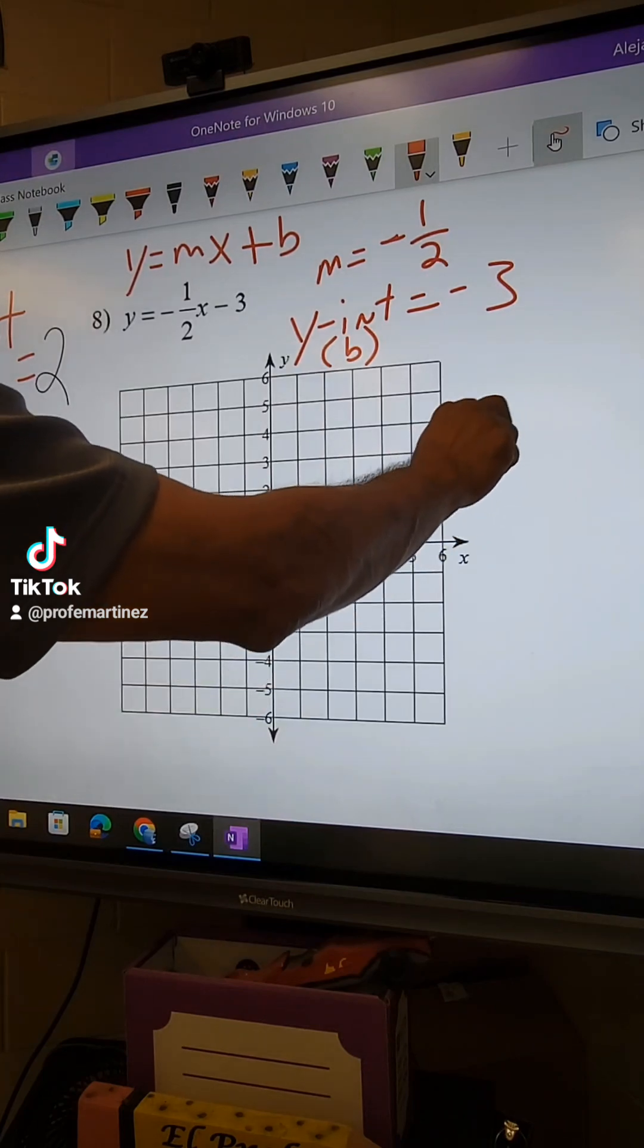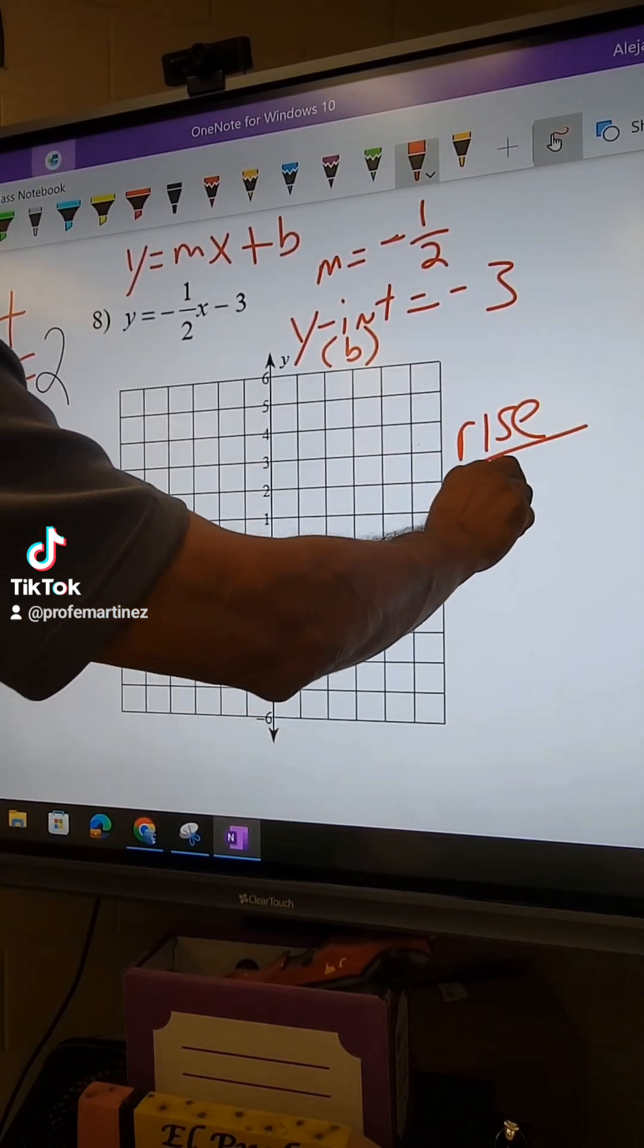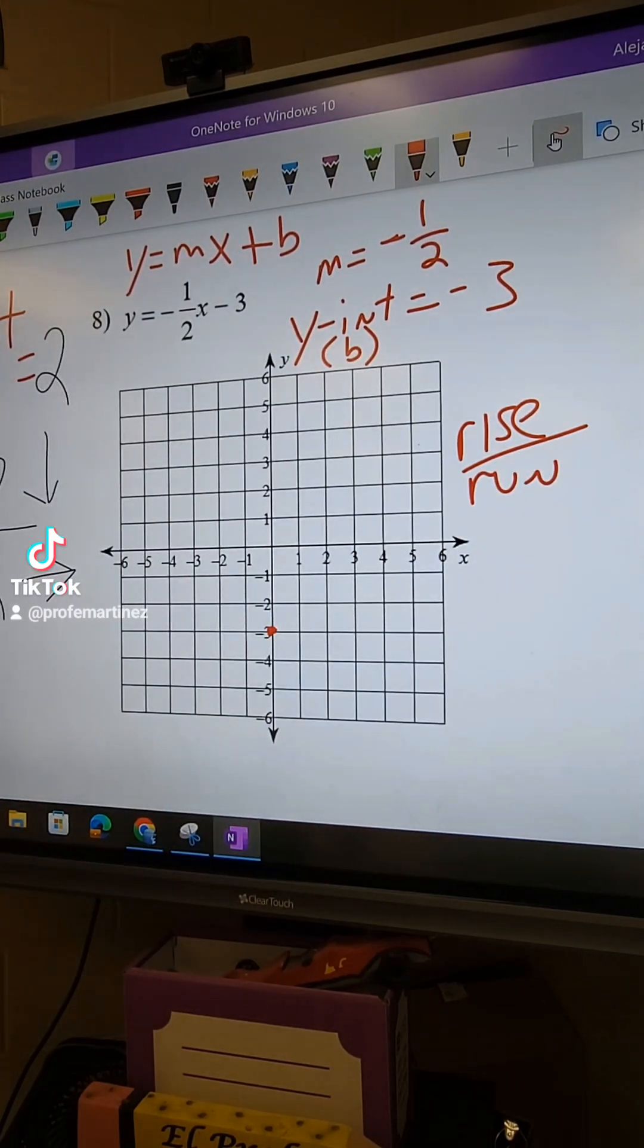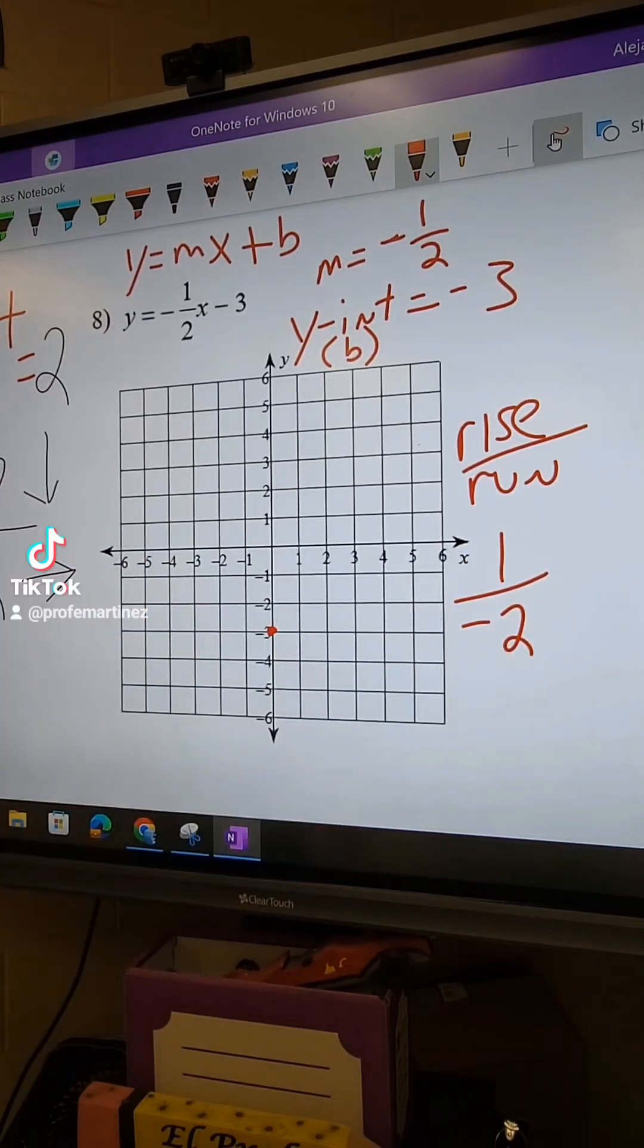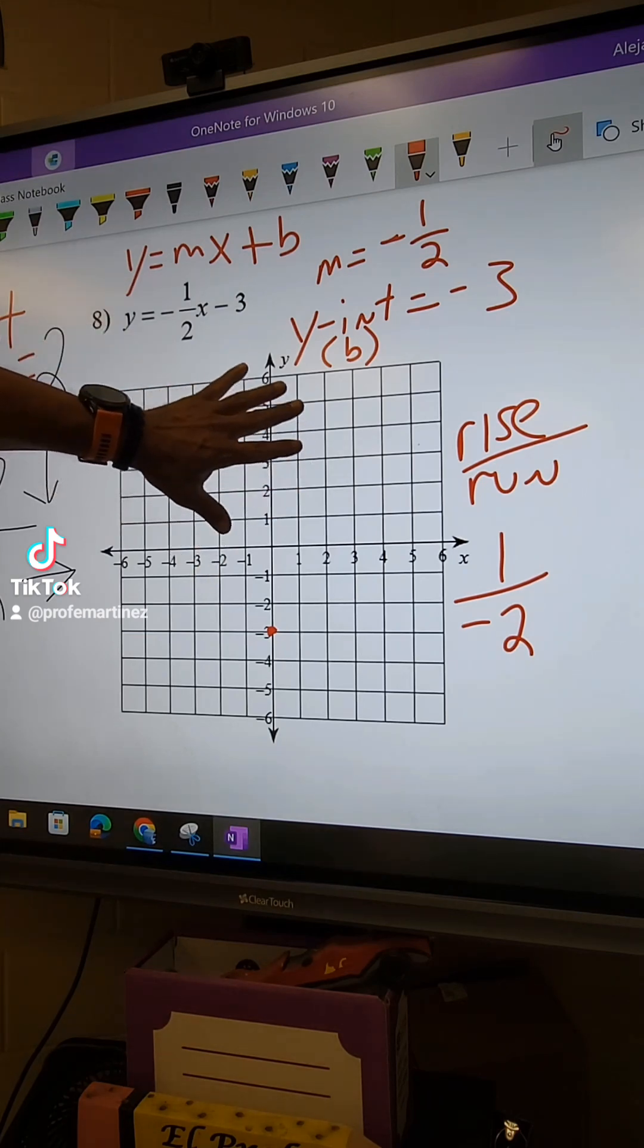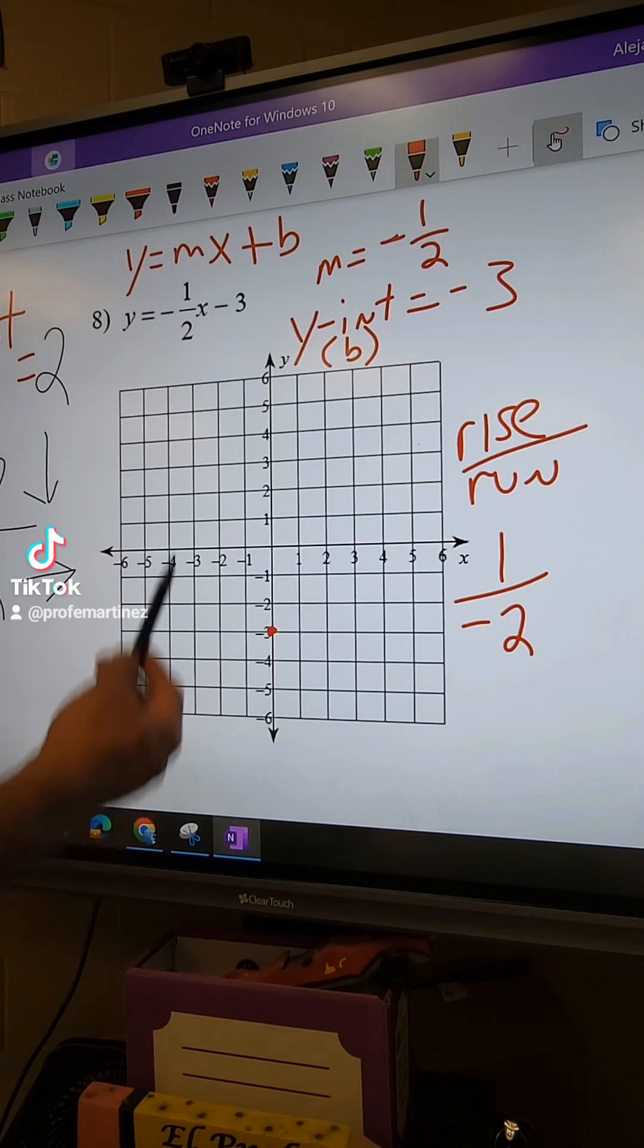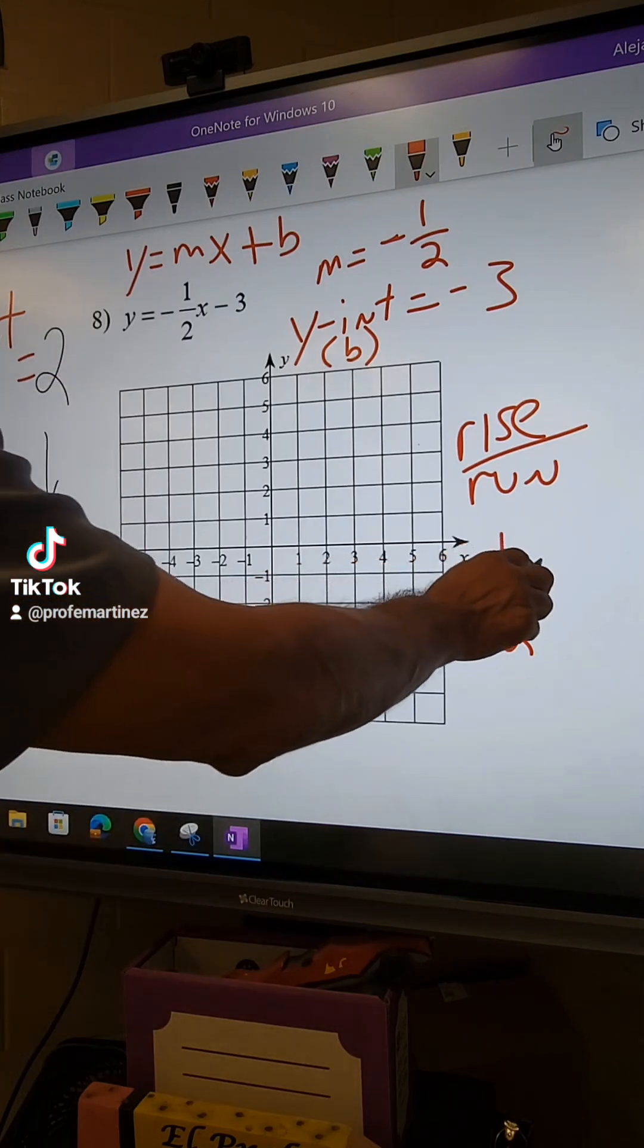So your rise over run is your slope. So I'm going to put here 1 over negative 2. Now I could have made the numerator negative and make the denominator positive. The only reason I did that is because I have more space on top of the graph. So I want to go up, so I made the 1 positive, so I'm going to go up.